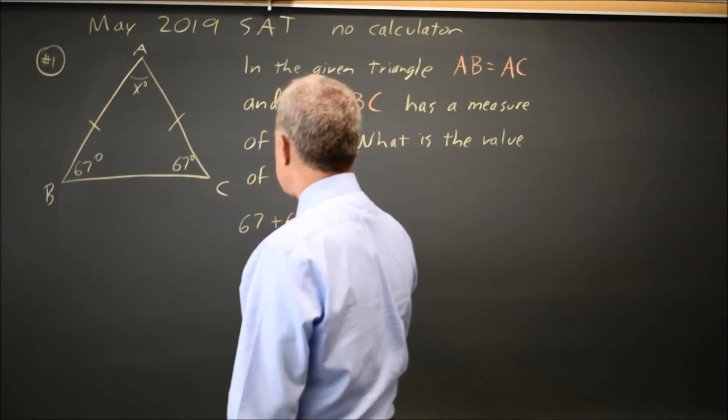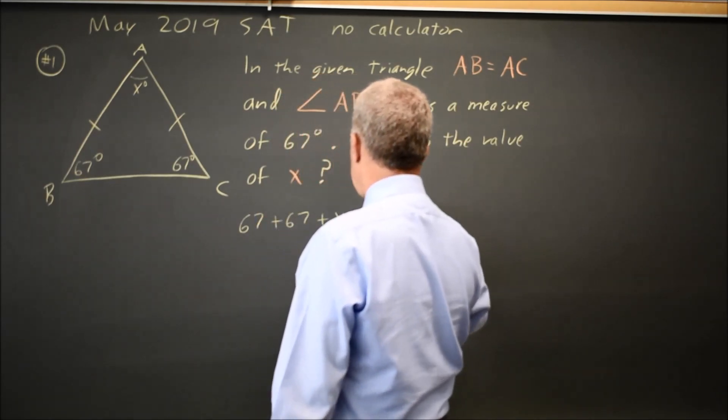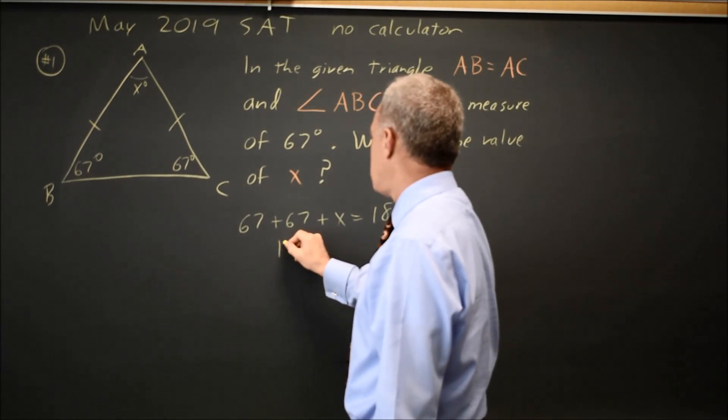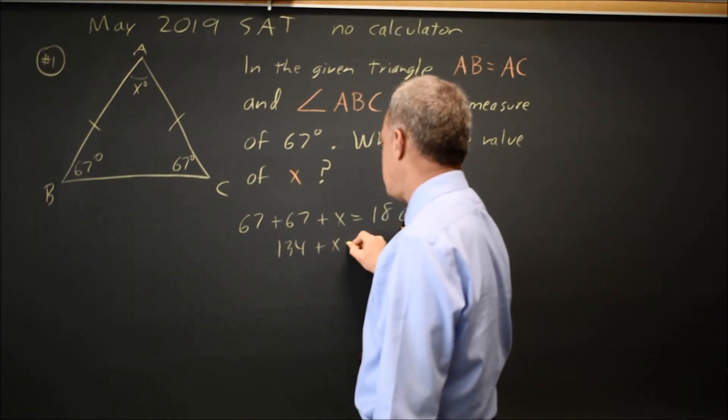So 67 plus 67 plus x equals 180. So 134 plus x equals 180.